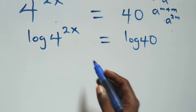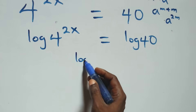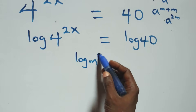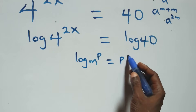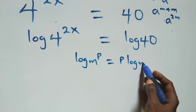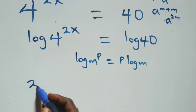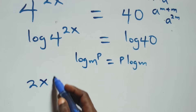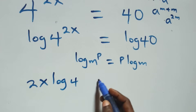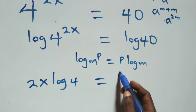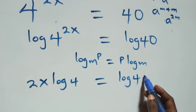Here we apply the power rule of logarithms. When we have log m raised to power p, this is the same as p log m. So this becomes 2x log 4 equals to log 40.